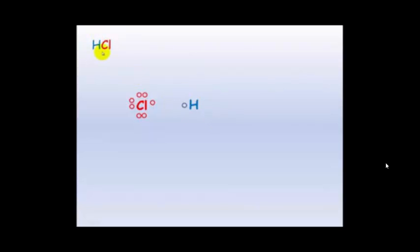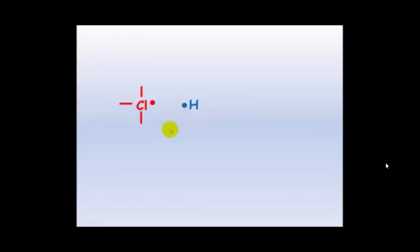Using the example of hydrochloric acid or hydrogen chloride: hydrogen has one electron in its outer shell and chlorine has seven. To get a full outer shell, chlorine needs to share one electron and hydrogen needs to share one electron. We replace the non-bonding electrons with a lone pair, and they form a single covalent bond.